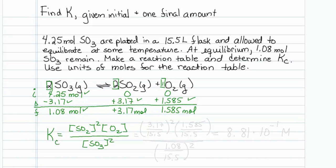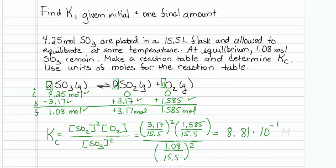I am getting Kc, so I need to put that in concentration units. Concentration is moles over liters. SO2 is 3.17 over 15.5, squared. O2 is 1.585 over 15.5 to the first power. The denominator is 1.08 over 15.5, squared. Putting that into my calculator, the value of the equilibrium constant comes out to be 8.81 times 10 to the minus 1, in units of molar. And that's all there is to that.